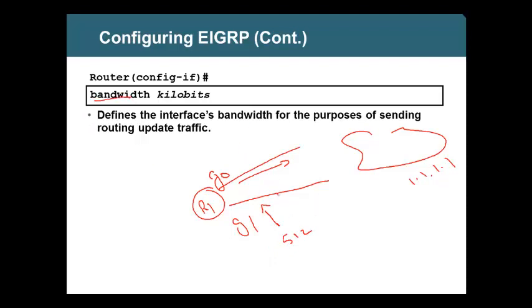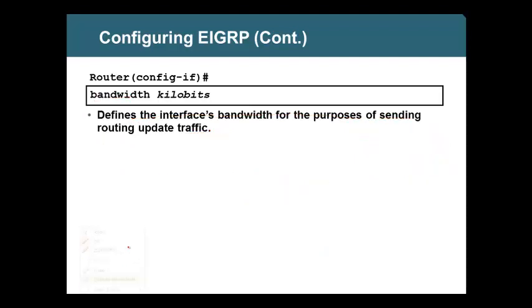The default bandwidth is 1000 on both links. When you decrease the bandwidth on one link, only the preferred link will appear in the routing table. When that link goes down, the other will be used. The bandwidth command defines the interface bandwidth for the purpose of routing update traffic — whatever you set is what will be advertised to the neighbor. Similarly, you also have a delay command where you can specify the delay value.